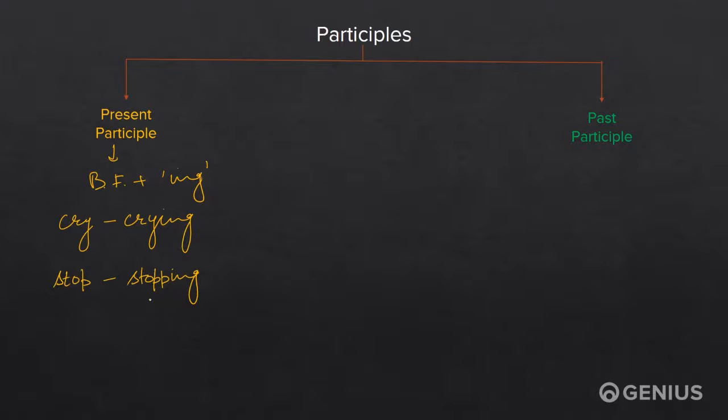Participles are of two types: present participles and past participles. The present participles are formed by adding -ing to the base form of the verb. For example, cry becomes crying, stop becomes stopping.